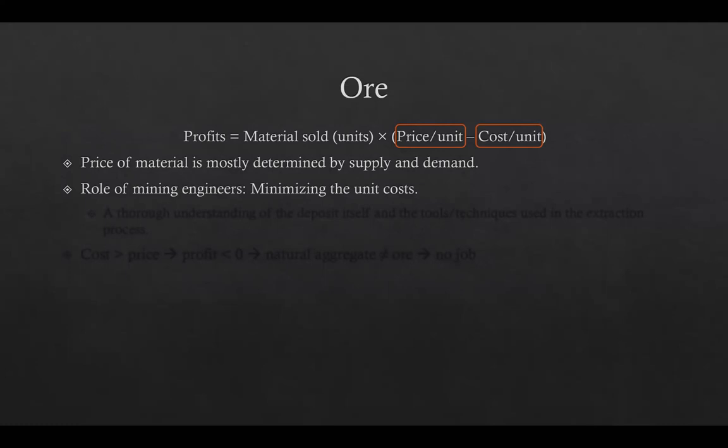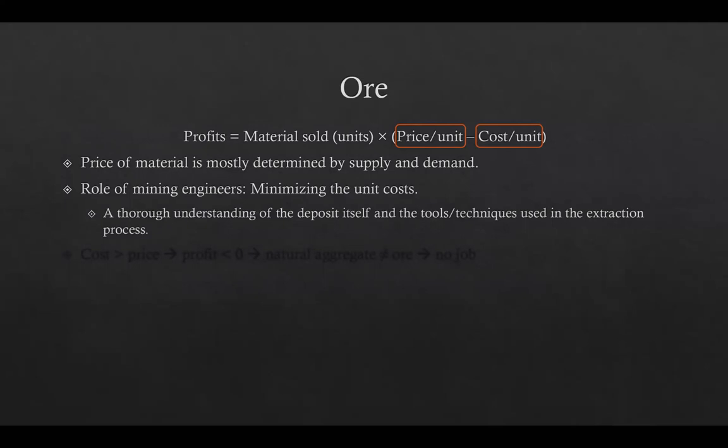Cost reduction can be achieved by a thorough understanding of the deposit itself and the tools or techniques used in the extraction process. Cost reduction is becoming more and more challenging because of increasing mining depths and ever more stringent regulations. If the mining engineer fails to keep cost below price, there will be no profit — no ore, and no job. So the personal meaning of ore for mining engineers is jobs.